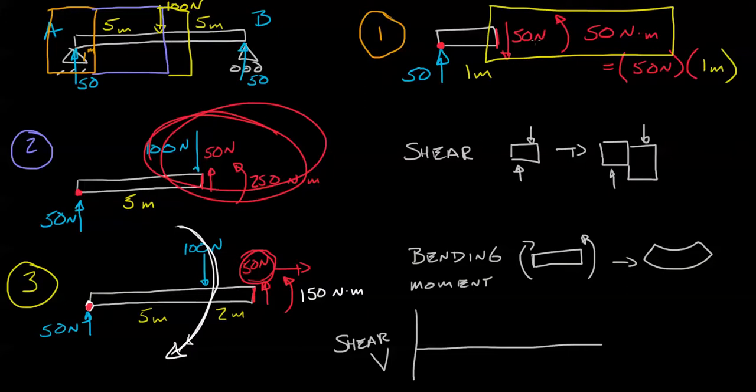By convention, 50 newtons facing down we call positive shear. So 1 millimeter across, let's draw this beam all the way from 0 meters to 10 meters.